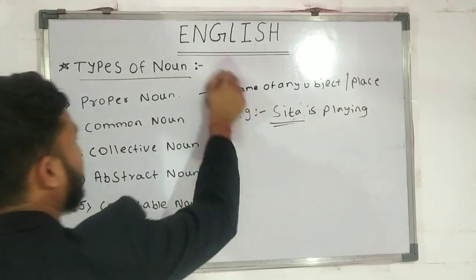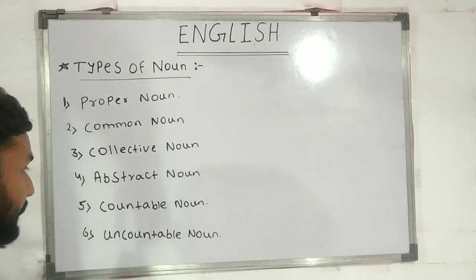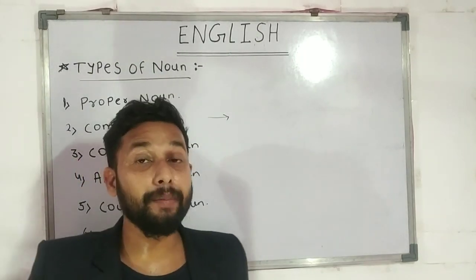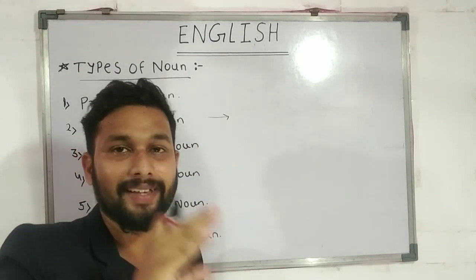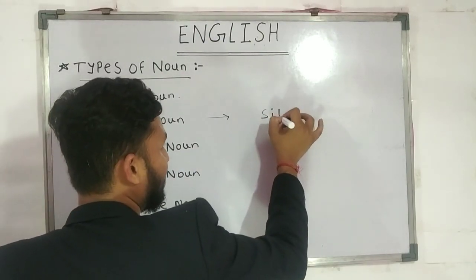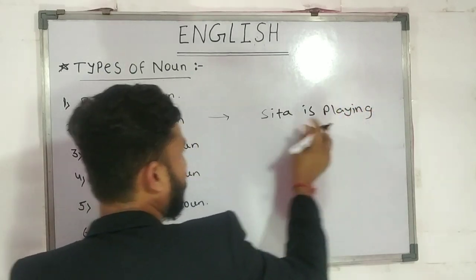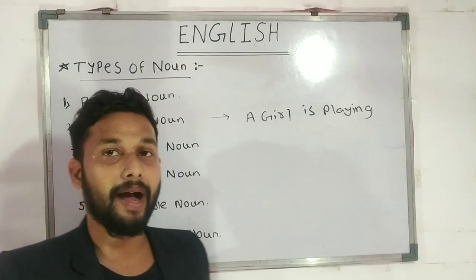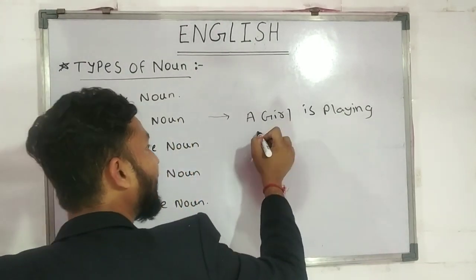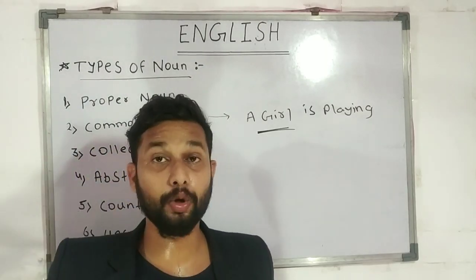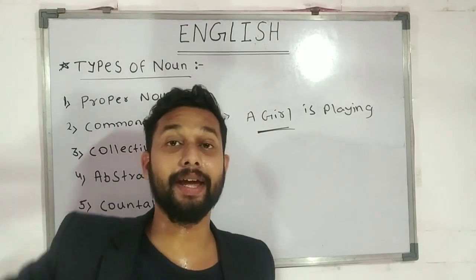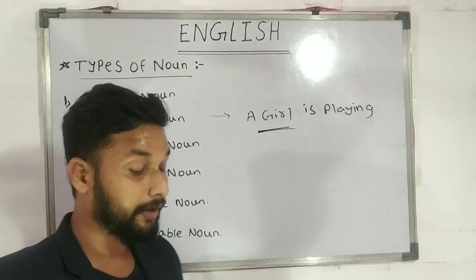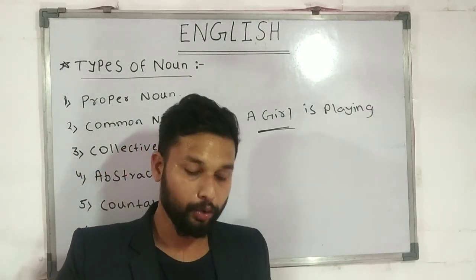Now we will see the second type of noun, which is common noun. If we take the proper noun 'Sita' and replace it, we can use a name which is common for each thing. For example, I wrote 'Sita is playing' — instead of Sita, I can write 'a girl is playing.' Sita is the name of a girl, so 'girl' is a common noun, because the word 'girl' can be used for many people. Names that we use commonly for a type of person or thing, we call common nouns.